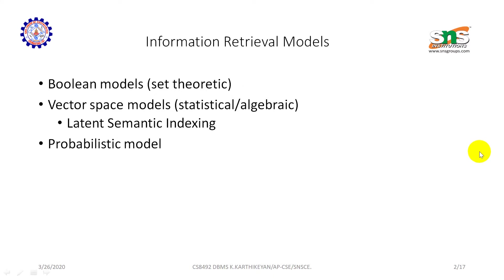We have three types of information retrieval models: the boolean model, the vector space model, and the probabilistic model.